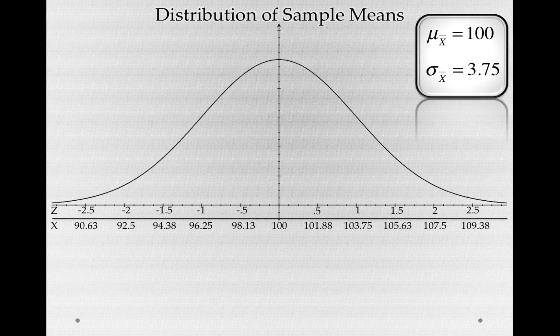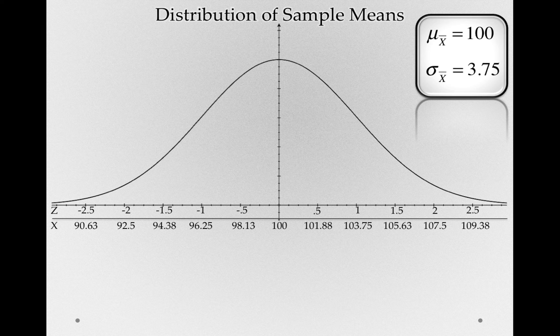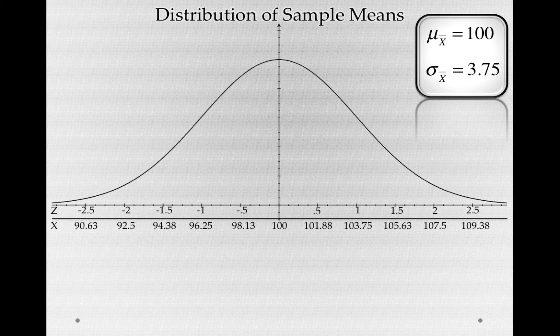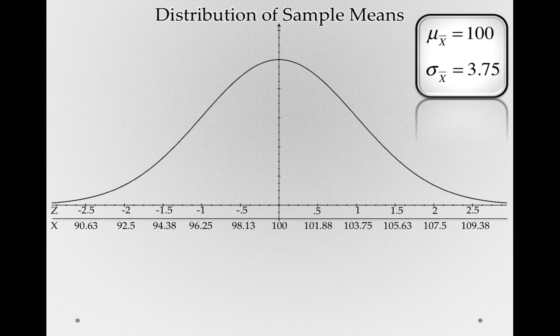So, this distribution of sample means was known even without knowing anything about the population. That is, we simply had to assume the null hypothesis was true, and we can know what sample means we're likely to obtain.